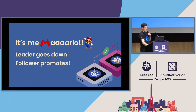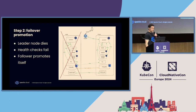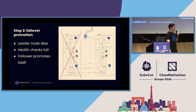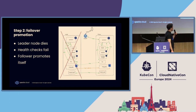When the leader goes down a promotion happens — the follower decides it must be in charge. The power cord might have been unplugged or the hard drive failed. We use ICMP ping, a TCP connection to the API server, and the kube-vip endpoint for health checks. We use kube-vip to load balance between the two control planes. The default check interval is every 30 seconds, and if enough checks fail we initiate promotion.